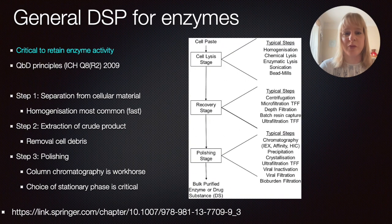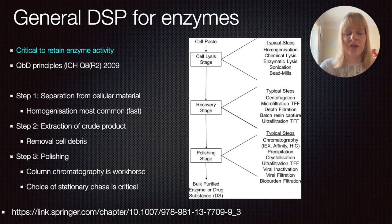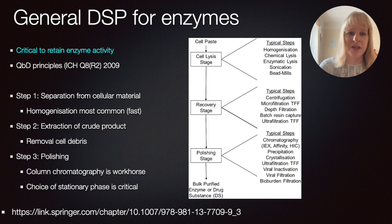What does a general downstream processing for enzymes look like? The critical aspect is to retain the enzymatic activity, which limits the options you have. We can look at quality by design principles — I have a separate video on this — which have been introduced to make sure that the quality of the product is maintained throughout the process, looking at critical process parameters and inbuilt quality.